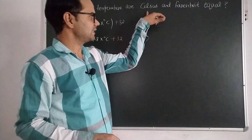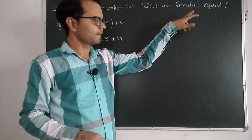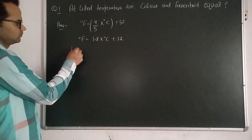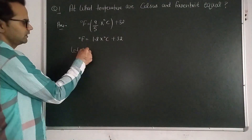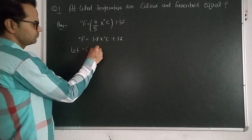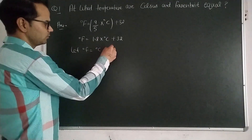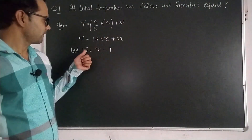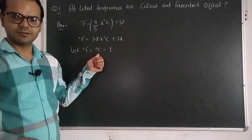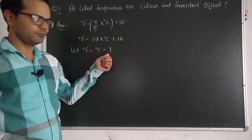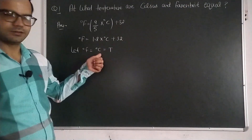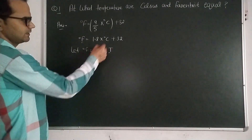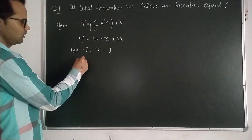The question clearly asks us to find the temperature value at which Celsius and Fahrenheit will show the same value. So let degree Fahrenheit = degree Celsius = t, where t is the temperature at which both scales will be equal. We have to find out this t, so we put degree Fahrenheit as t and degree Celsius as t.